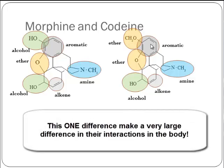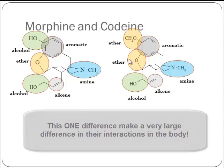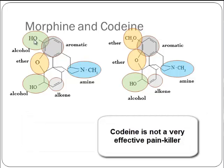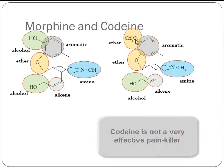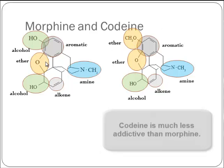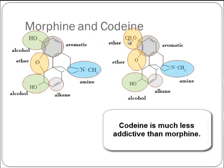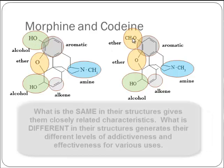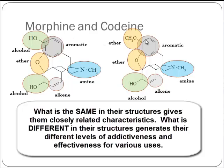They have essentially identical structures with this one difference: an alcohol off the aromatic ring in morphine, and an ether off the aromatic ring in codeine — instead of an H, we have a CH₃. That actually makes their behavior very, very different. Codeine isn't a particularly good painkiller, but it's pretty good at reducing cough and has less addictive nature than morphine. That one tiny change — OH to OCH₃ — creates a very large difference in their properties, while all that stays the same is why they can act similarly.